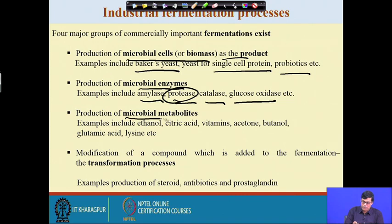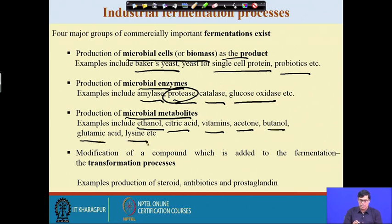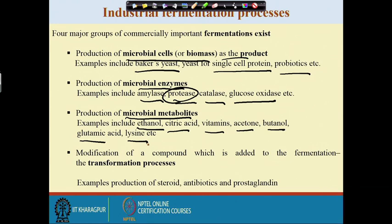Different microbial metabolites are also commercially used: ethanol, citric acid, vitamins, acetone, butanol, glutamic acid, and lysine, among others. However, an important point to stress is that while most chemicals we need in daily life can in principle be produced through biological means, in practice many are not — because the concentration of these biochemicals in the fermentation broth is very low, making recovery costs so high that they cannot compete with chemical processes. Research is ongoing to increase product concentration and reduce recovery costs.